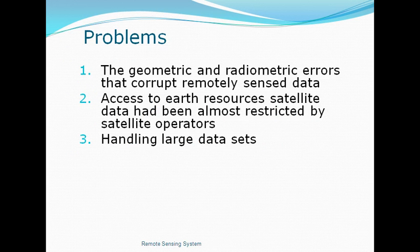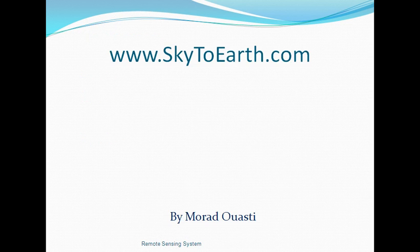Some of the problems that we might meet when dealing with remote sensing systems are the geometric and radiometric errors that corrupt remotely sensed data, the access to Earth resources and satellite data had been almost restricted by satellite operators, and we usually meet problems when handling larger data sets.